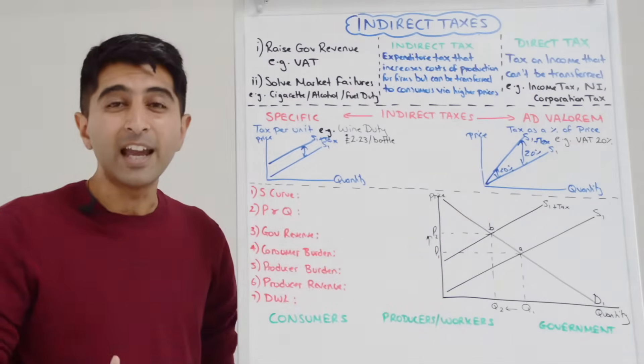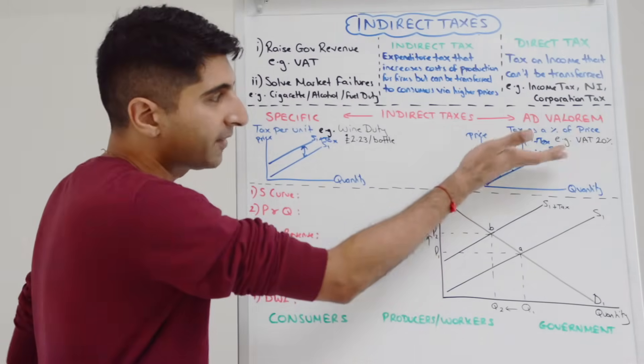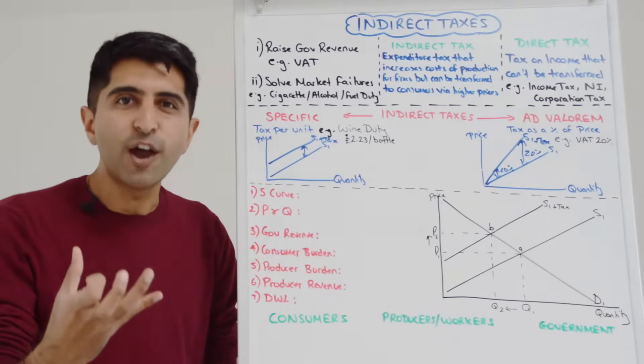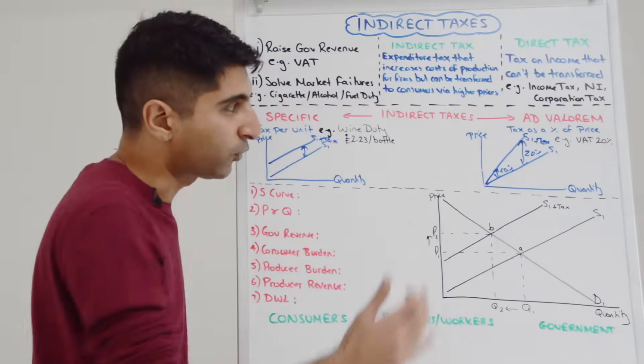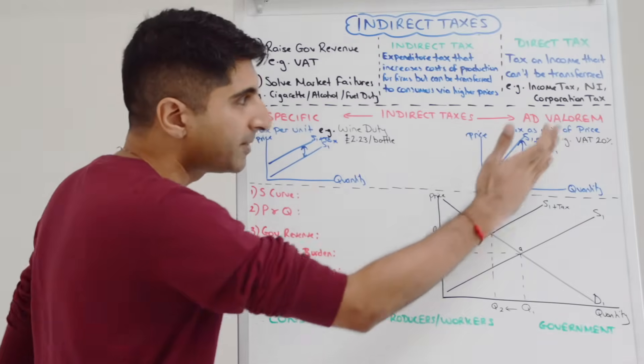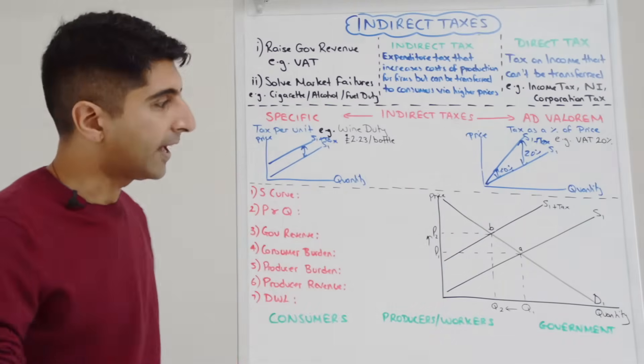So all we're trying to say is that the vertical distance is always 20%, but 20% of a high price is a high amount of tax revenue collected versus 20% of a low price. So ad valorem taxes shift the supply curve pivoted to reflect that.